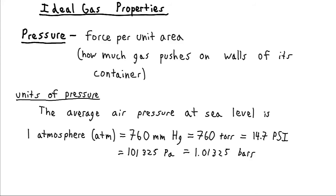Our units of pressure: the average air pressure at sea level defines the atmosphere, or ATM. One atmosphere is defined to be equal to 760 millimeters of mercury, which is the same as 760 torr, or 14.7 pounds per square inch as sometimes used in the United States. The actual SI unit is pascals, which is newtons per square meter. So one atmosphere is equal to 101,325 pascals, or 1.01325 bar.